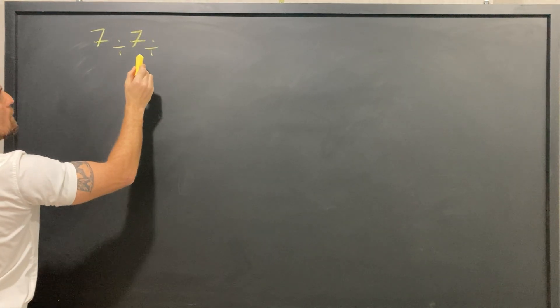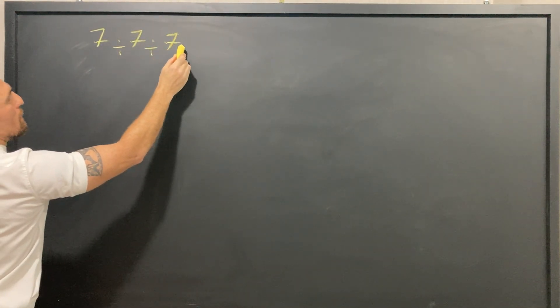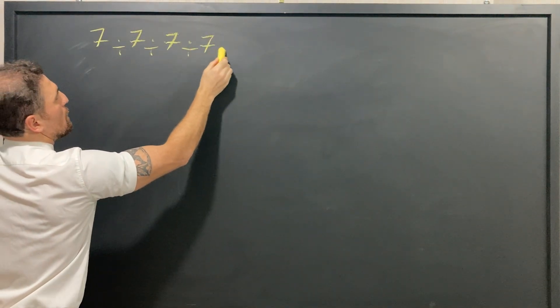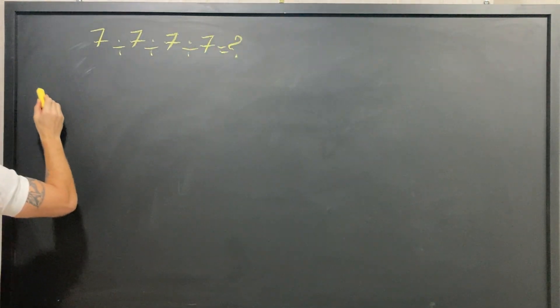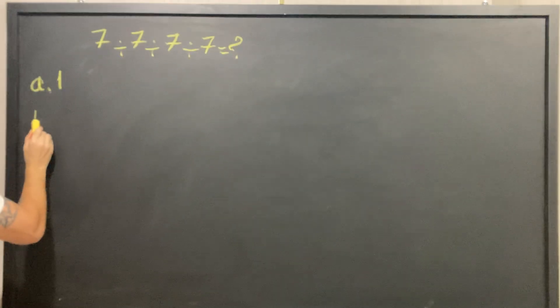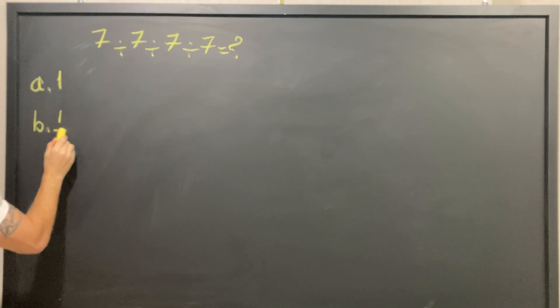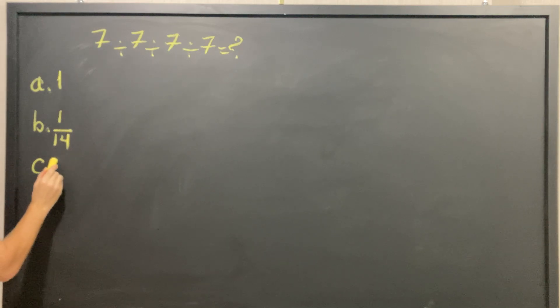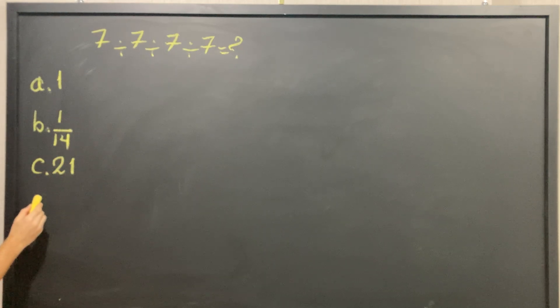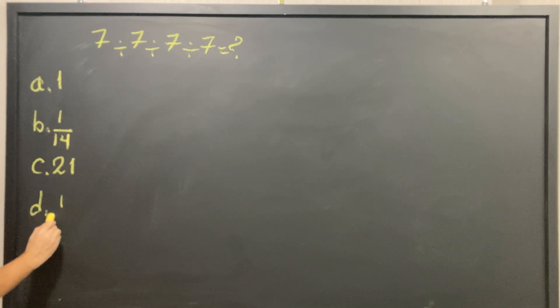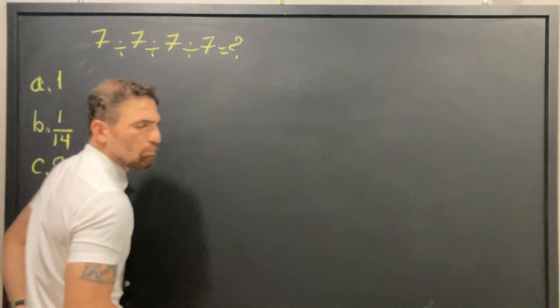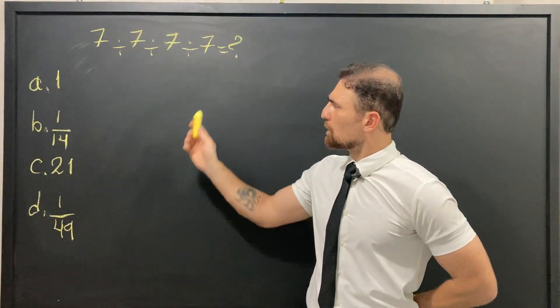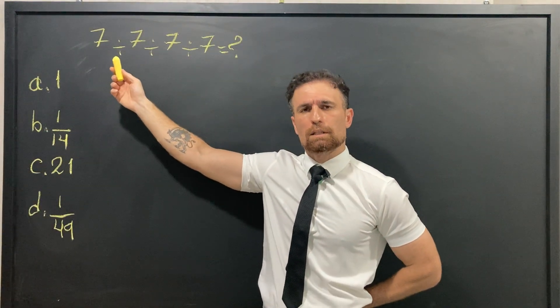The question says: find the value of 7 ÷ 7 ÷ 7 ÷ 7. Option A: 1. Option B: 1/14. Option C: 21. Option D: 1/49. The question looks easy — easy peasy lemon squeezy — but why do I say many get it wrong?